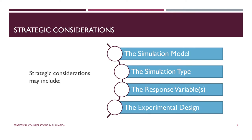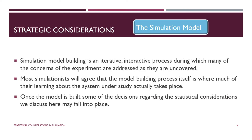You want to examine and build the simulation model early. There is no special ordering among your decisions about the simulation model, the simulation type, the experimental design, and choosing the response variable. Each time you make one of these overarching decisions, you may have to go back to the others and reconsider. These aspects all exist in the context of the larger simulation study involving the statistical considerations we're examining here.